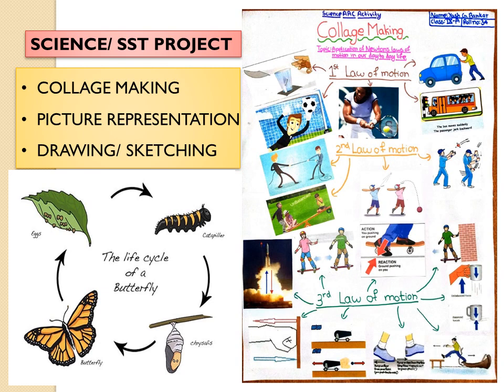Activities such as collage making, poster making, and drawing competitions can also be part of your teaching methods. This is a science activity where Newton's first law of motion is taught. Students have made and brought in the first, second, and third laws of motion, pasting pictures accordingly. This collage making can also be part of English, science, languages, and mathematics. It depends upon how a teacher is able to make the students part of her activities.